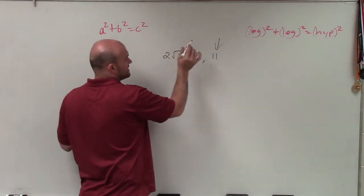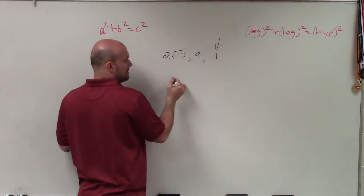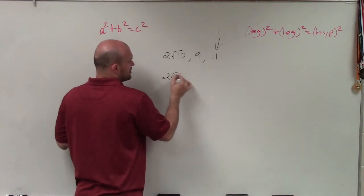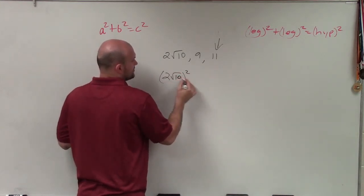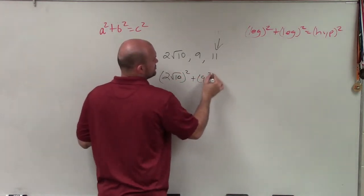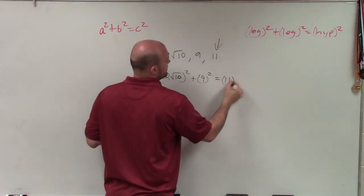So again, we're going to take leg squared plus leg squared equals hypotenuse squared. So I do 2 square root of 10 squared plus 9 squared equals 11 squared.